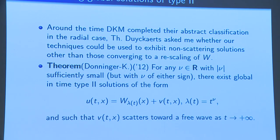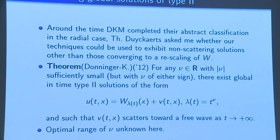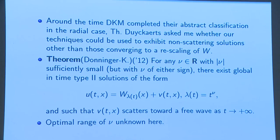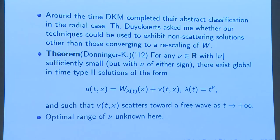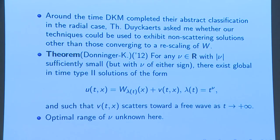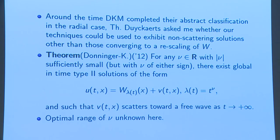You can have solutions which vanish at infinity but don't scatter, or solutions which concentrate at infinity, getting arbitrarily large — they blow up at infinity in some sense. The optimal range here is unknown, as is the optimal regularity for such solutions. We could only construct them in class H^1, not C^∞, because we had to use techniques from the proof of Duyckaerts-Kenig-Merle.